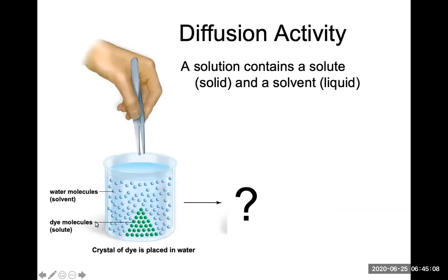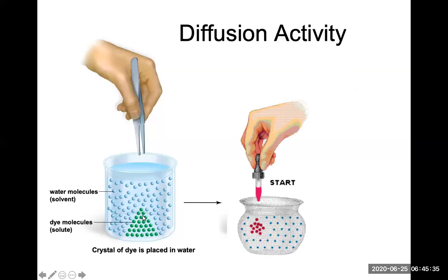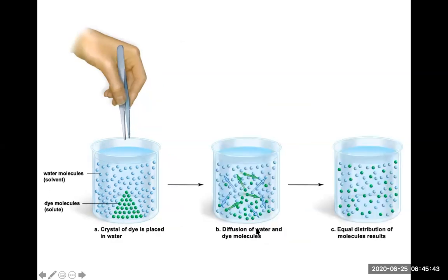Another example is looking at a solvent of water molecules. If we place some dye molecules in it — say food coloring — the dye starts extremely concentrated in an area of high concentration. Due to simple diffusion, the water and dye molecules will spread out by their own energy and get completely mixed up until an equal distribution of molecules results, moving from an area of high concentration where the dye is placed to an area of equal concentration where everything is equally distributed.